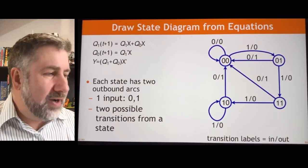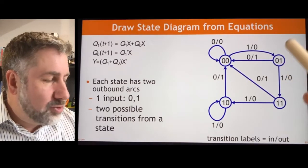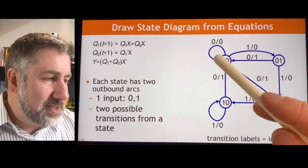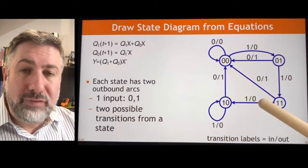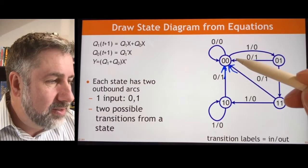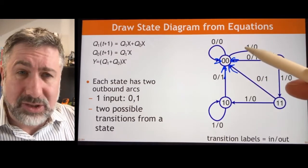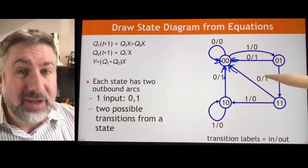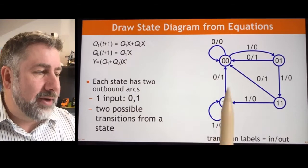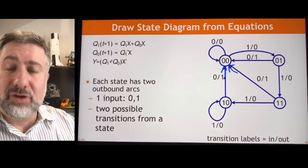Going through the whole process, we find a state diagram where each state has two possible transitions caused by the input being 0 and the input being 1. They may go to different states or stay in the same state. In this case all four states are used and all four have transitions to other states. A state can have as many transitions into it as you want, but a state will only ever have as many transitions out of it as there are possible input combinations to the device.